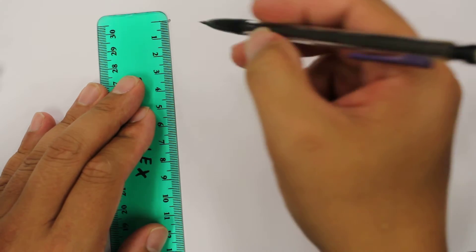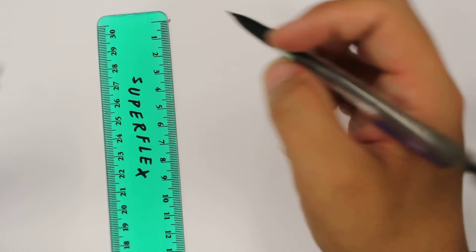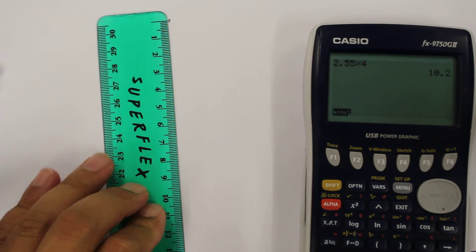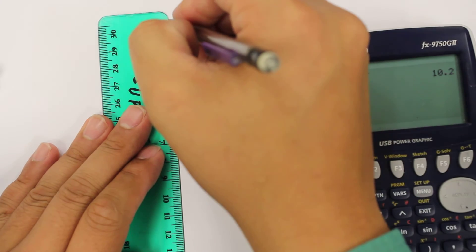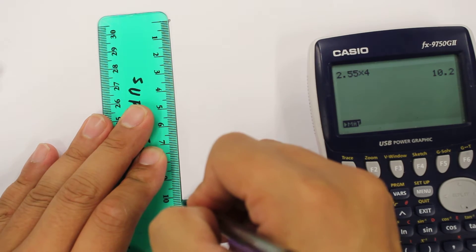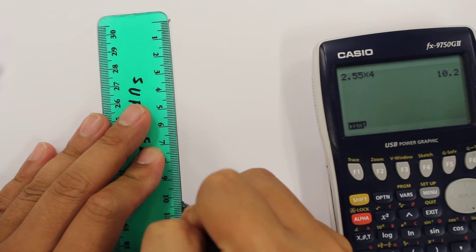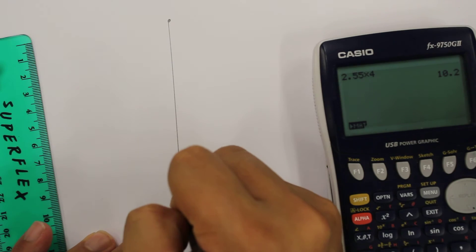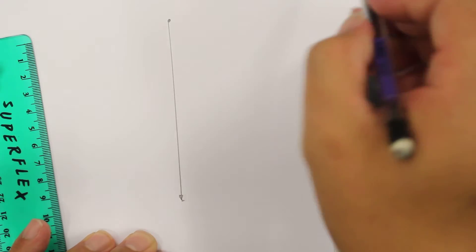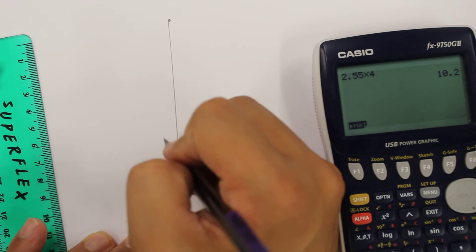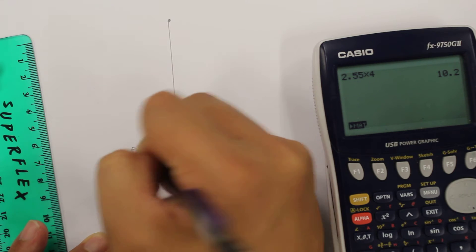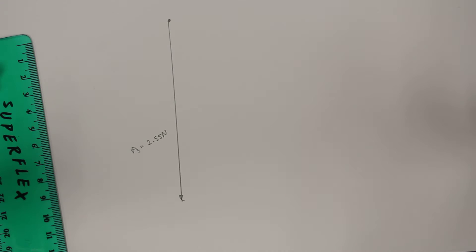Okay, so force 3 going down, that was 2.55 Newtons. So 2.55 Newtons, and we multiply it by 4 to get it in centimeters. So that's 10.2 down. Okay, so this vector going down has a magnitude that corresponds to 2.55 Newtons, and that is force 3 that we had before. It's the first in our polygon of forces.